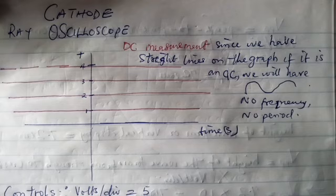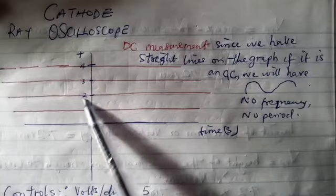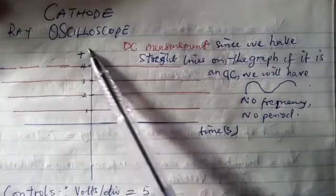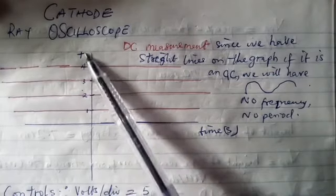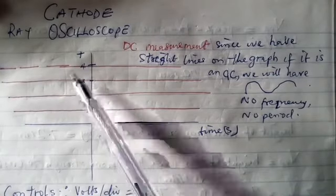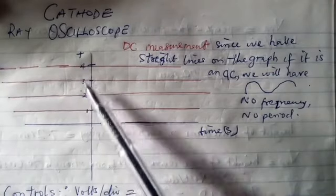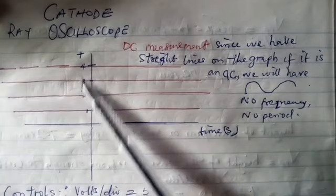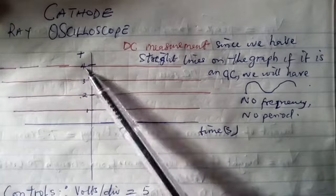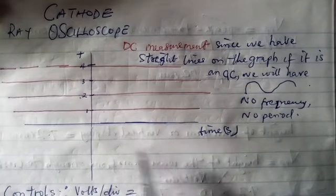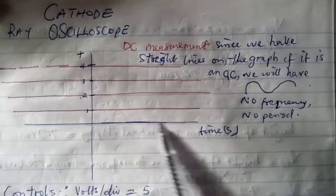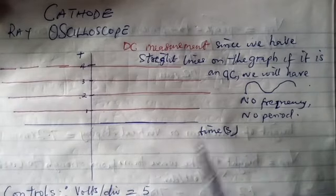That means voltage is on the vertical axis. On this vertical axis, we measure voltage. While the horizontal axis talks about time.